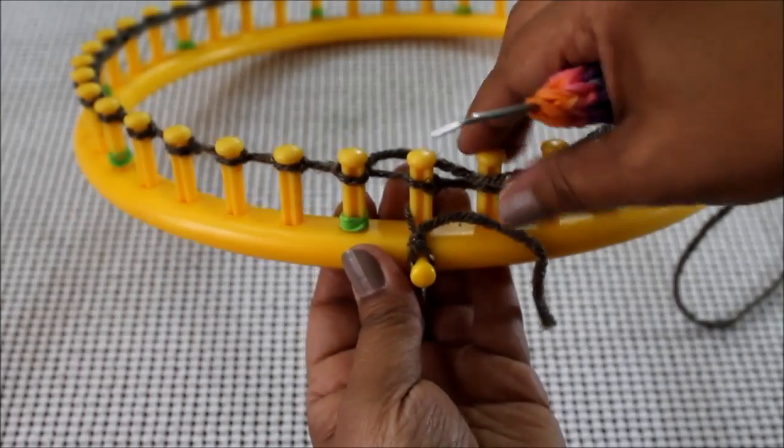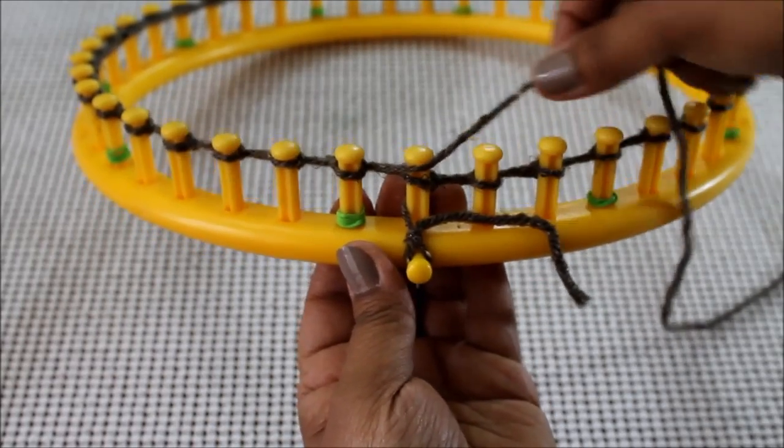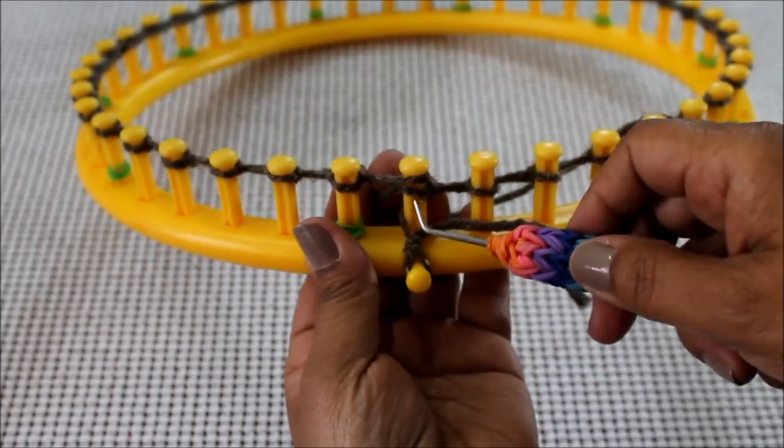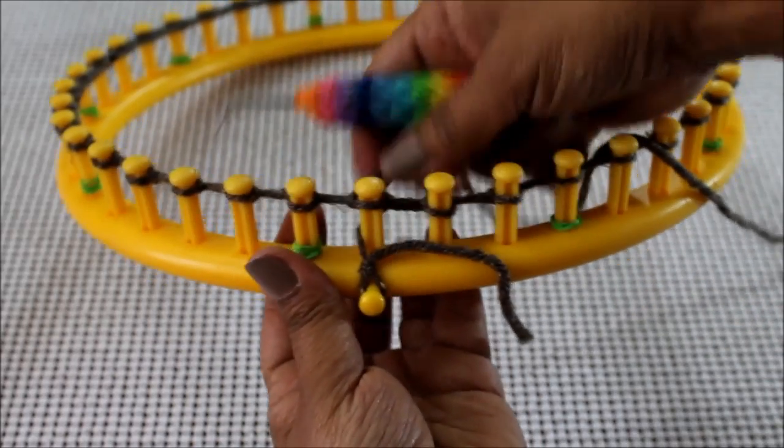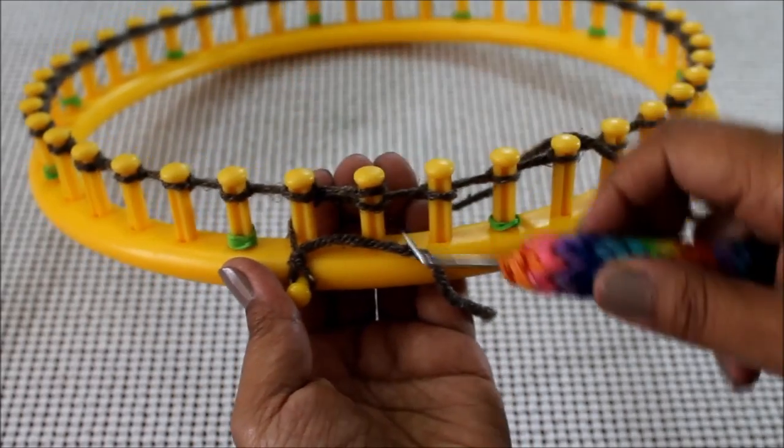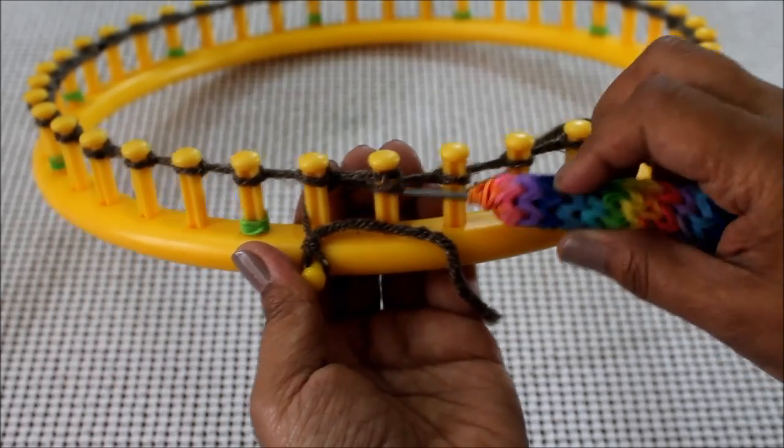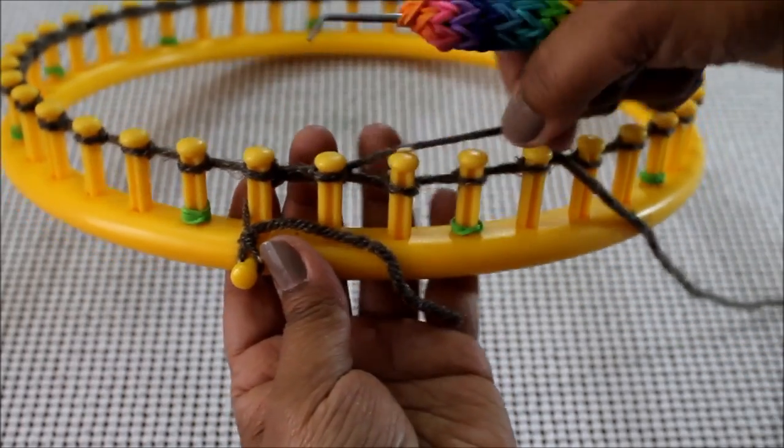Now we're ready to move to row number one and we're going to use the U-wrap knit stitch like we did when we cast on. So you're going to half wrap your peg, take the bottom loop over the top and knit off.